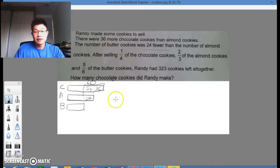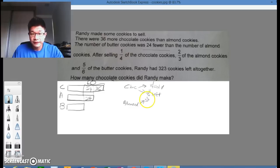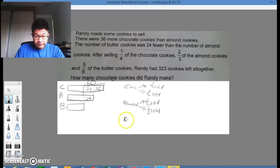So now we go and tabulate what we have. We have the chocolates, which we sold one quarter, and we have three quarters left. Same thing for almonds. We have two-thirds sold, and therefore we will have one-third left. And then we have the butter, which we know that is basically five-sixths was sold and one-sixth left.